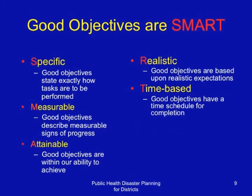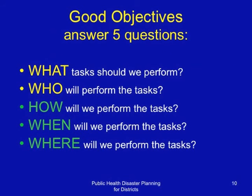Good disaster management planning objectives should be SMART — that is, specific, measurable, attainable, realistic, and time-bound or time-based. Good planning objectives answer five questions: What tasks do we perform during the disaster? Who will perform the tasks? How will we perform the tasks? When will we perform the tasks? Where will we perform the tasks?